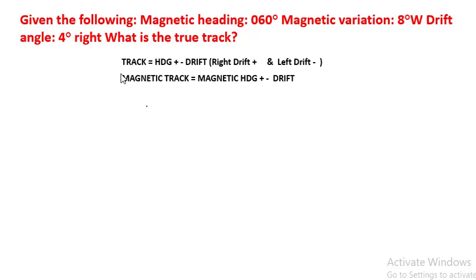To solve this question, we will use the formula: track equals heading plus or minus drift. In case drift is right, then we will use plus sign. And in case drift is left, then we will use minus sign.